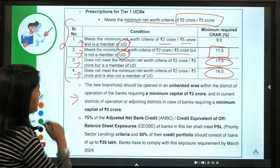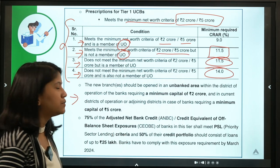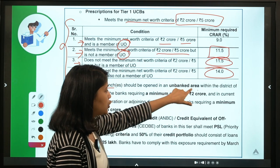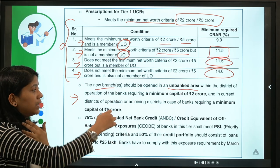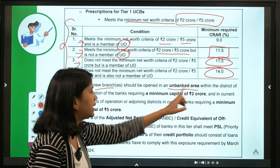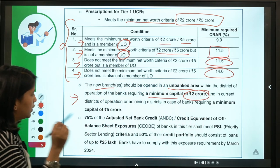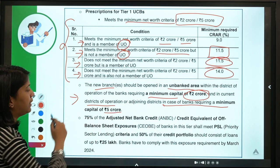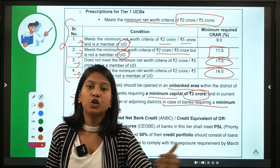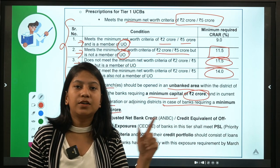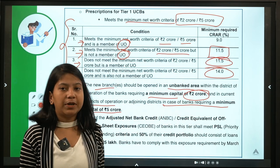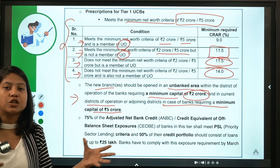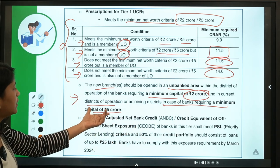For Tier 1 UCBs, new branches must be opened in unbanked areas. For banks requiring a minimum capital of 2 crores, branches should be in the district of operations. For banks requiring a minimum capital of 5 crores, branches can be opened in adjoining districts. If the bank has no branch in an entire district, the minimum capital requirement applies accordingly.